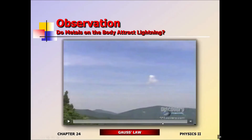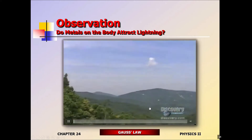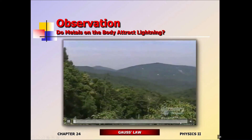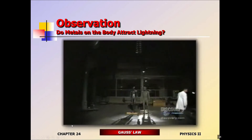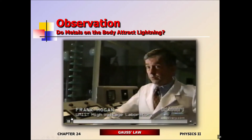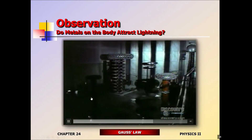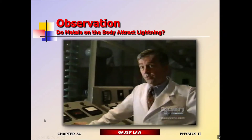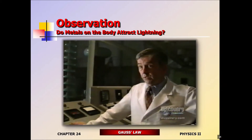The next question is: speaking of metals, we know they're good conductors, but are they really good at attracting lightning? Does metal on your body attract lightning? At a high voltage lab in Manchester, England, researchers are preparing to find out. They use an impulse generator charged to a voltage of approximately one and a half million volts, causing a simulated lightning bolt. The mannequins have been painted with an electrically conductive paint so that they simulate the resistance of the skin of a human under normal conditions. Various metal objects have been attached to the test dummies.